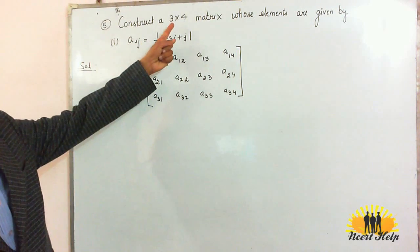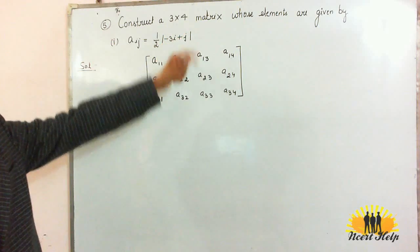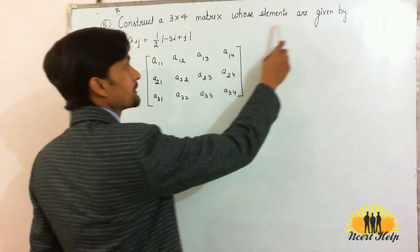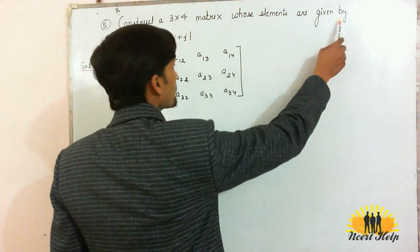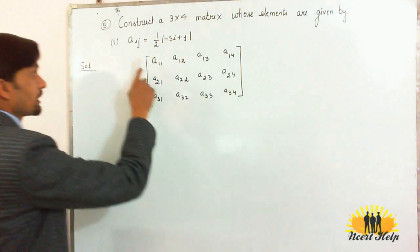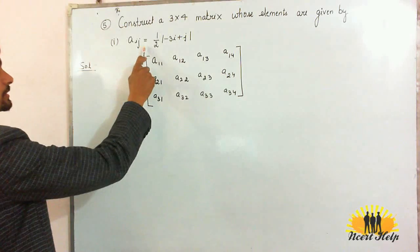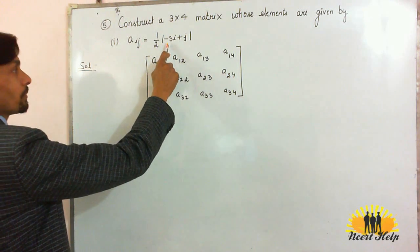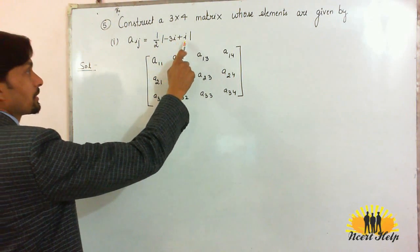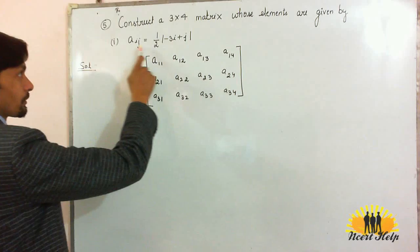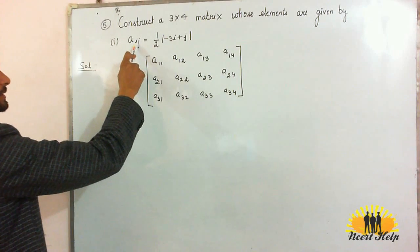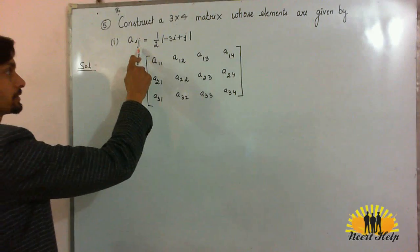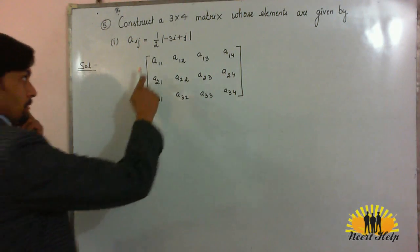Construct a 3×4 matrix whose elements are given by A_ij = (1/2)|−3i + j|, where i represents the row number and j represents the column number.